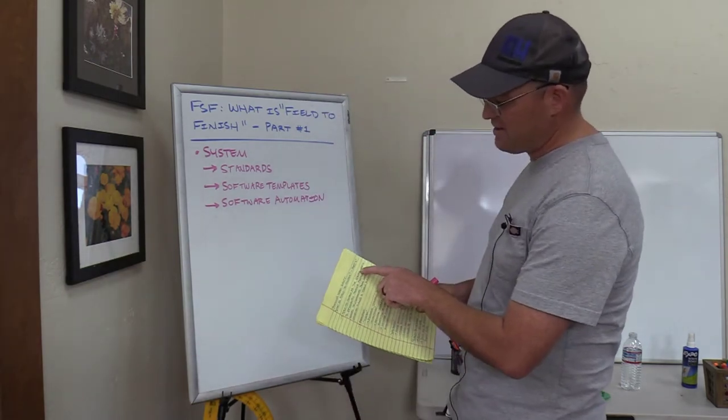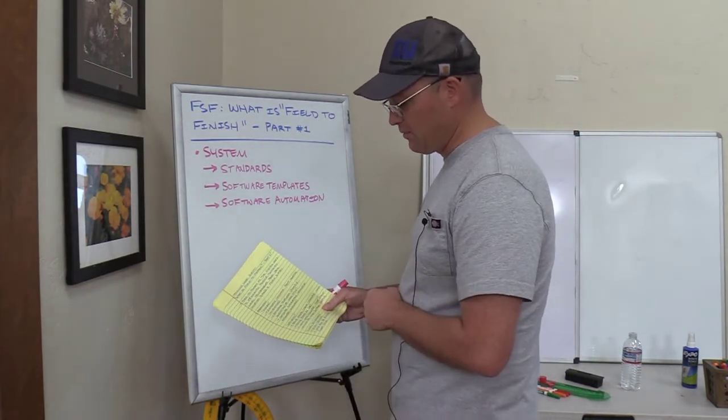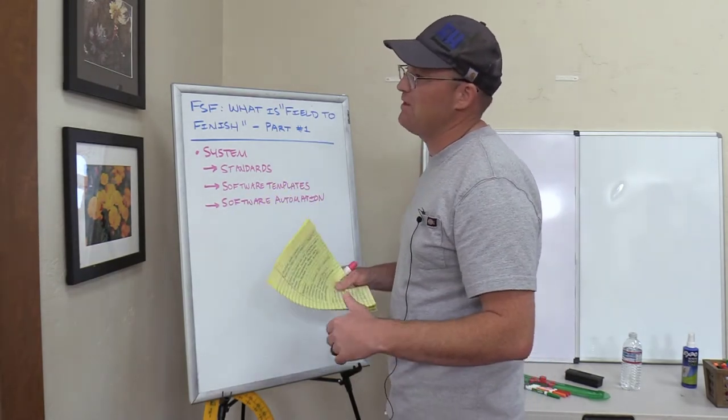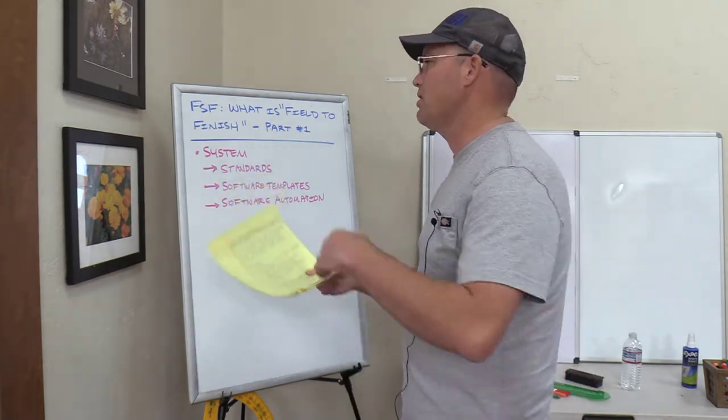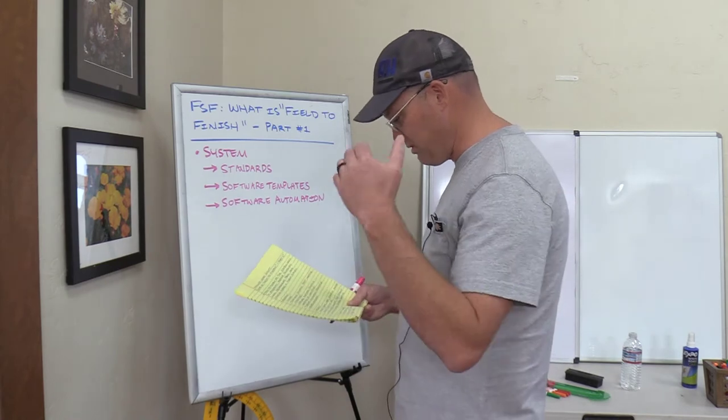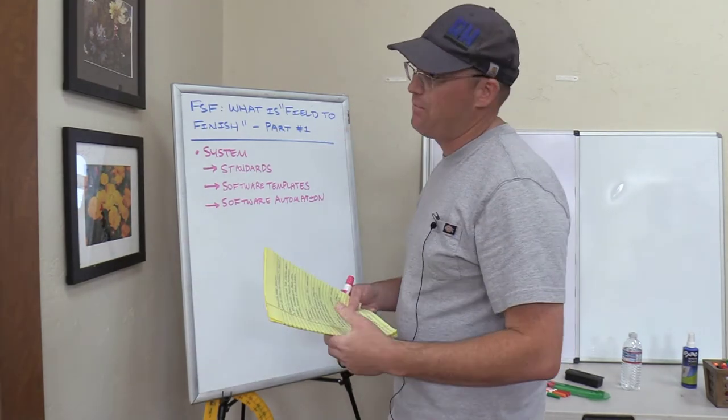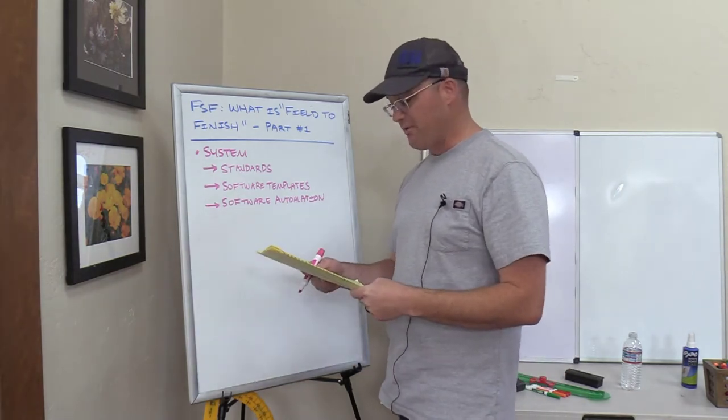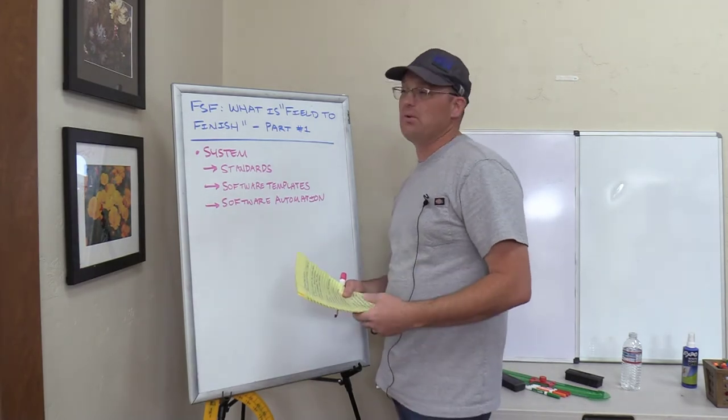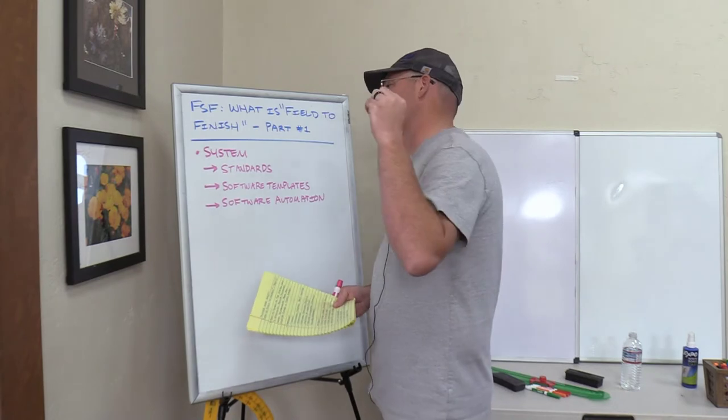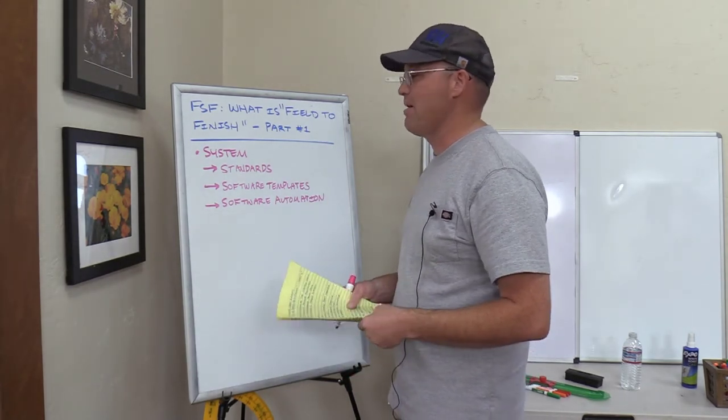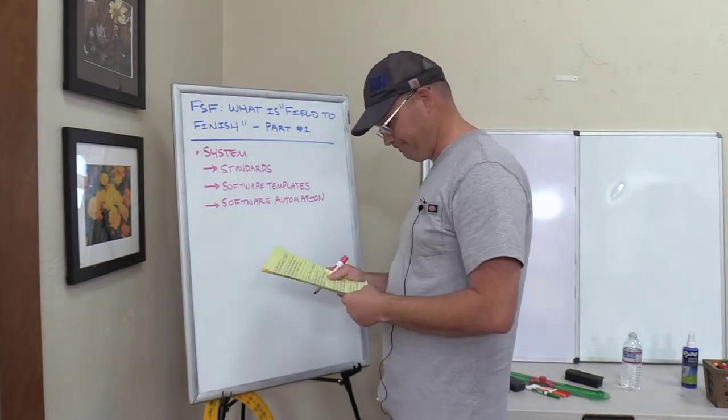Standards like point naming conventions or feature codes or description keys. There's software templates. Those are parts of the field to finish system that you set up in your software. Then there's the actual software automation that happens in your software. So if we go back to that next part of the definition, field to finish is the system used to efficiently produce finished survey deliverables. What do I mean by efficiently? Well, we're trying to reduce manual labor. For example, if you've got a topo survey, you import your point file for your topo survey, and then you go in and you hand layer your points. You put all the dirt shots on the dirt layer, the curb shots on the curb layers, the building shots on the building layer. If you're doing that by hand, that is extremely inefficient. You need field to finish.